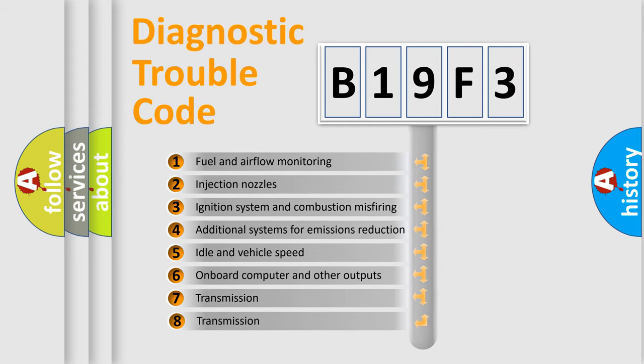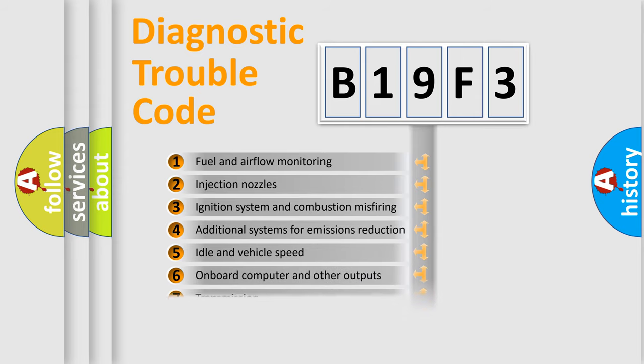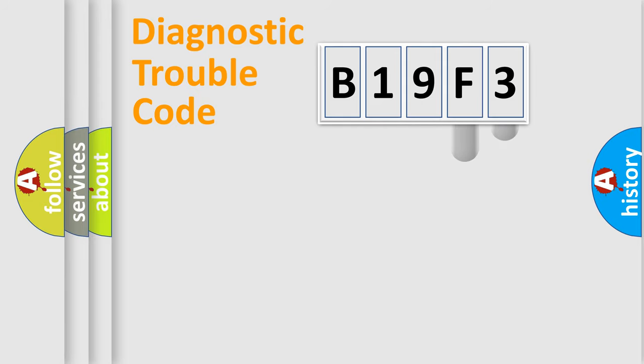The third character specifies a subset of errors. The distribution shown is valid only for the standardized DTC code. Only the last two characters define the specific fault of the group.